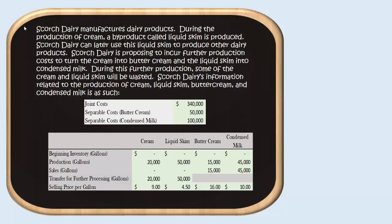We have information about the quantity, sales price, transfer amounts, and sales amounts for all of our different products. For cream, we had zero beginning inventory. We produced 20,000 gallons of cream. We decided not to sell any of this cream as is, but instead transfer all 20,000 gallons for further processing to become buttercream. But had we sold it as cream, we would have sold it for $9 per gallon.